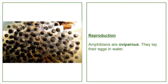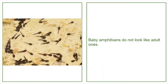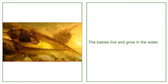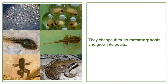Reproduction: amphibians are oviparous — they lay their eggs in water. Baby amphibians do not look like adult ones. The babies live and grow in the water, and they change through metamorphosis as they grow into adults.